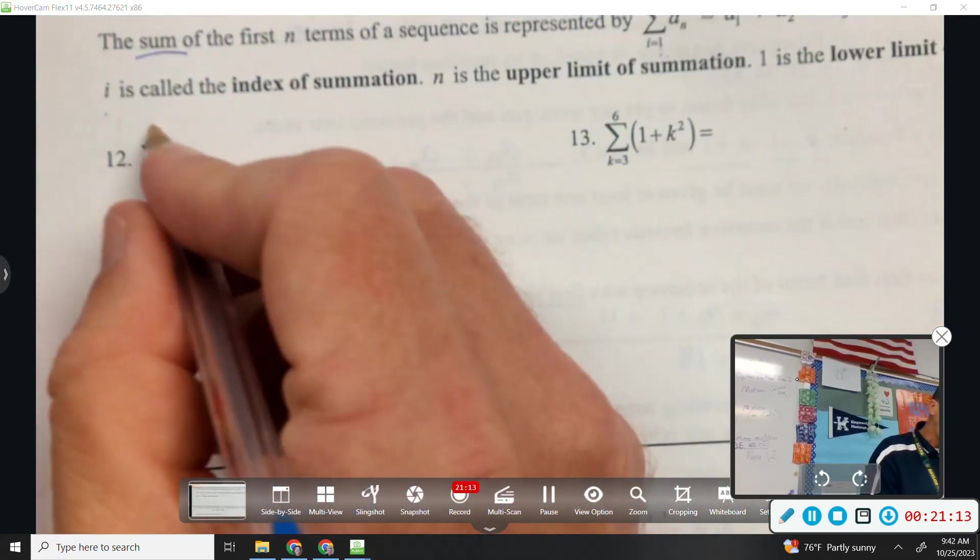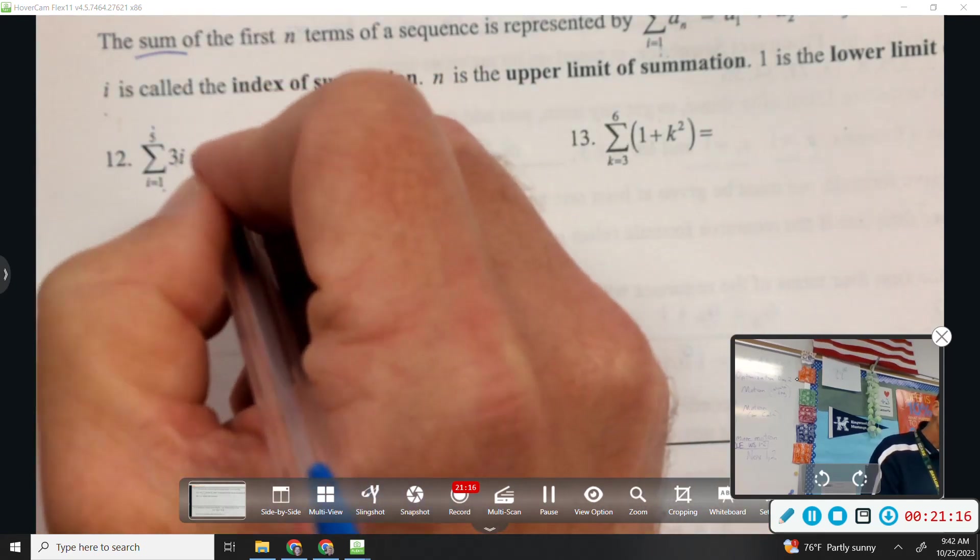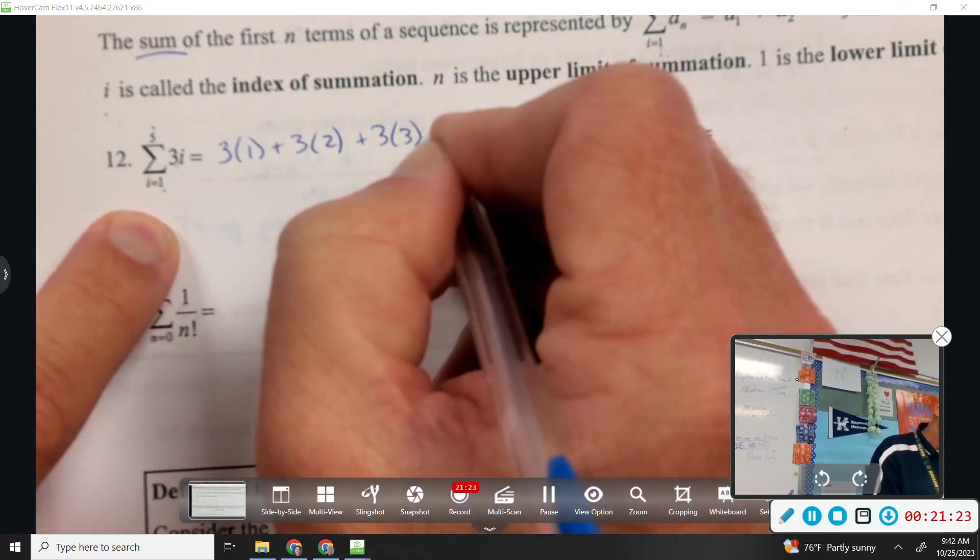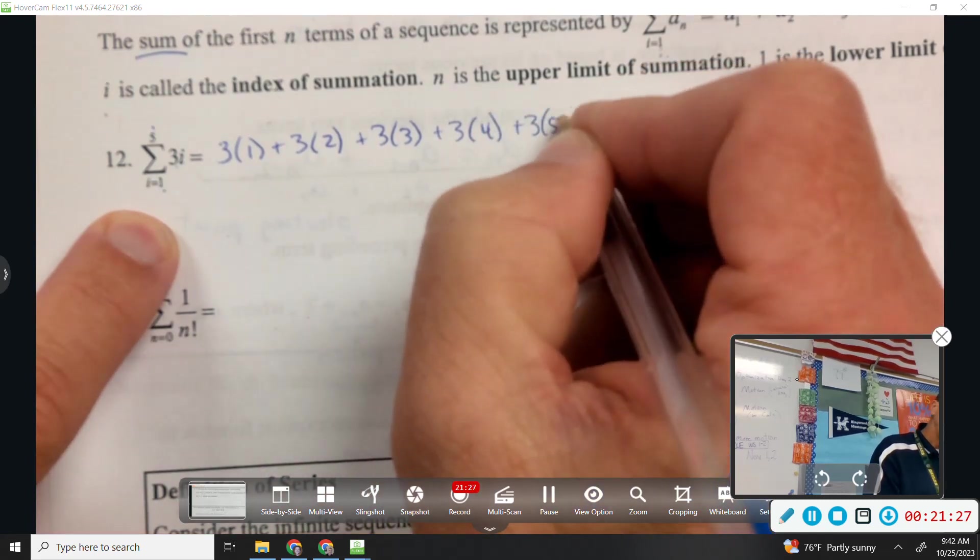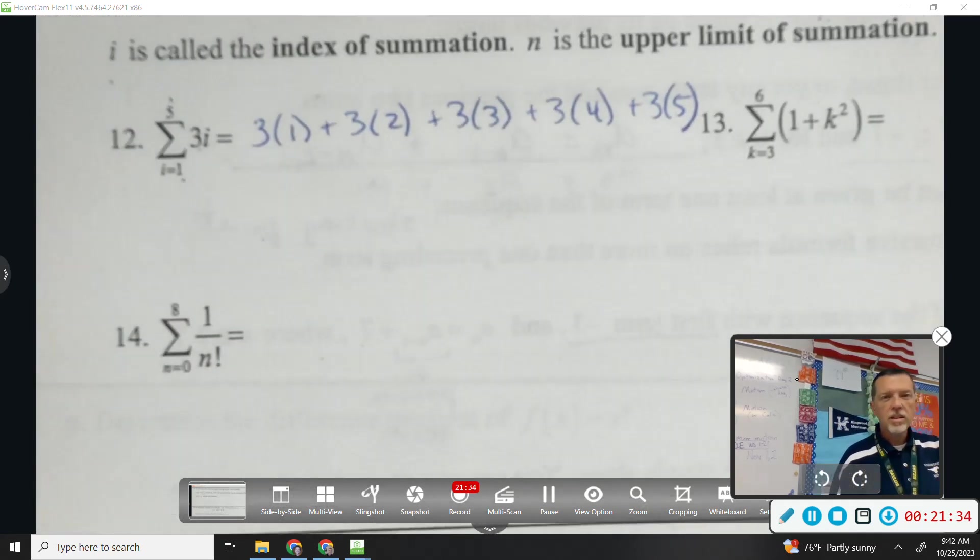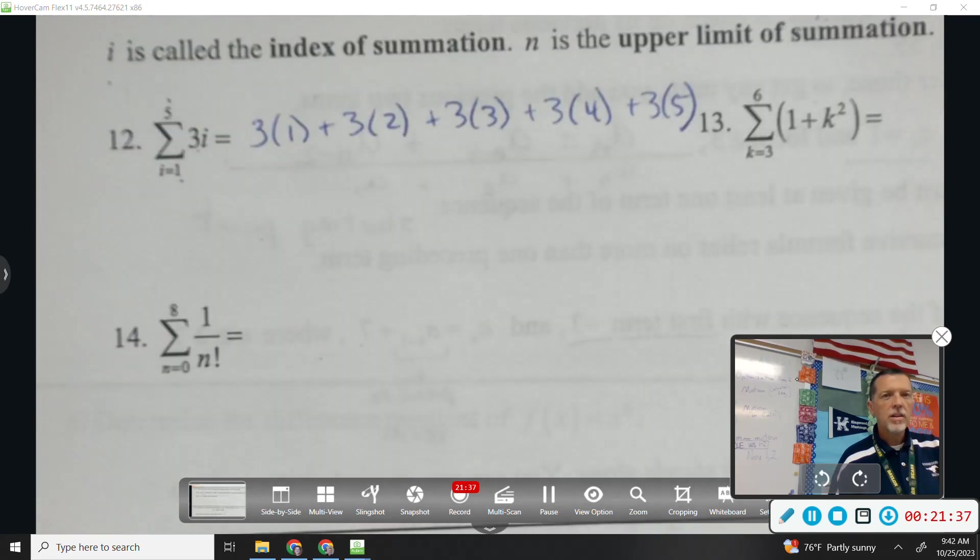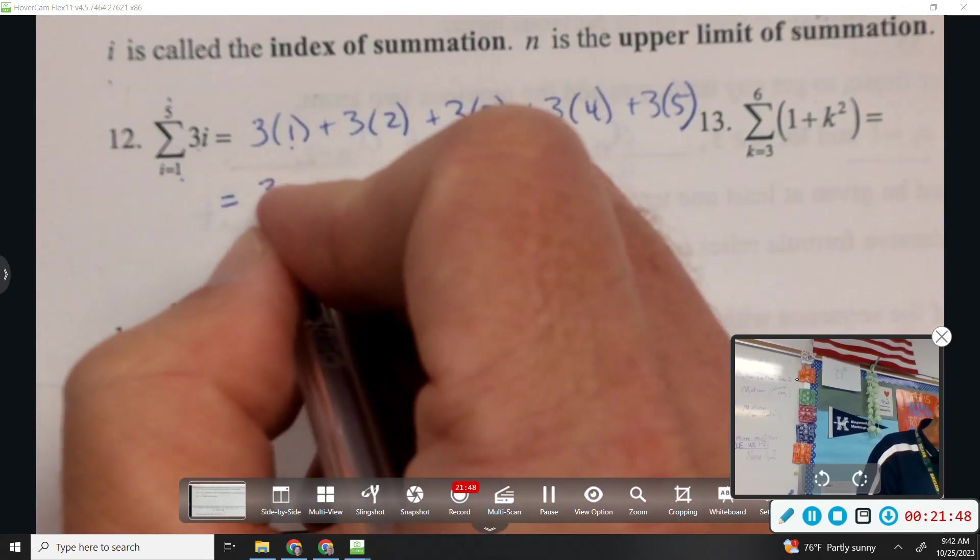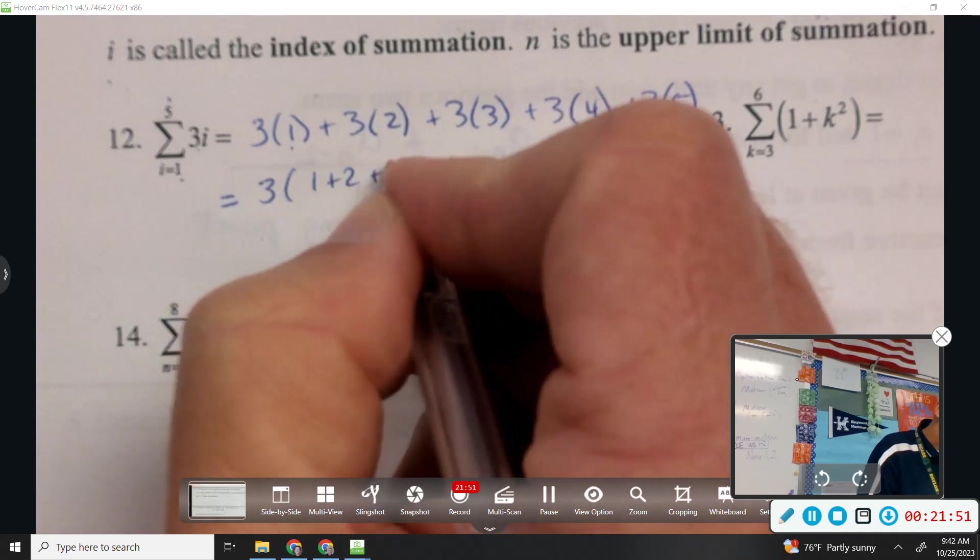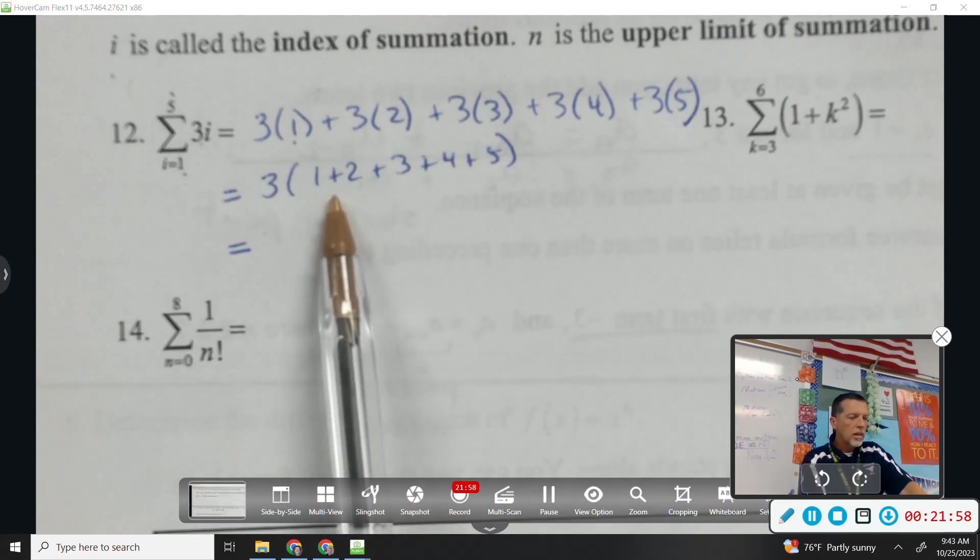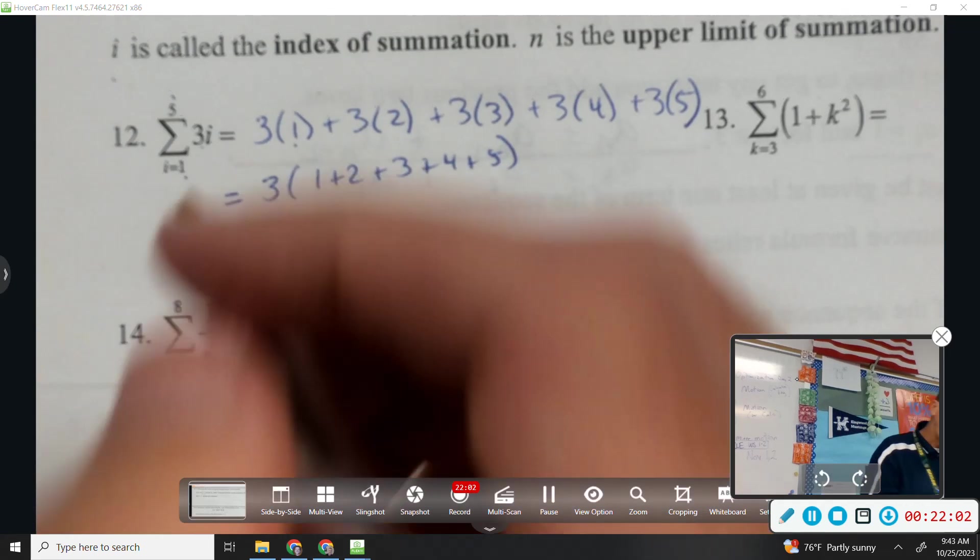So number 12, the sum from 1 to 5 of 3i. So we plug in 1. And then we plug in 2. And then we plug in 3. And we plug in 4. And then we plug in 5. I wish this would focus a little better, but it'll go well. So we started with 1. We went to 5. Oh, I could factor a 3 out. That might make it a little easier when it comes to actually computing this thing. 3, 6, 10, 15. 15 times 3 is 45.